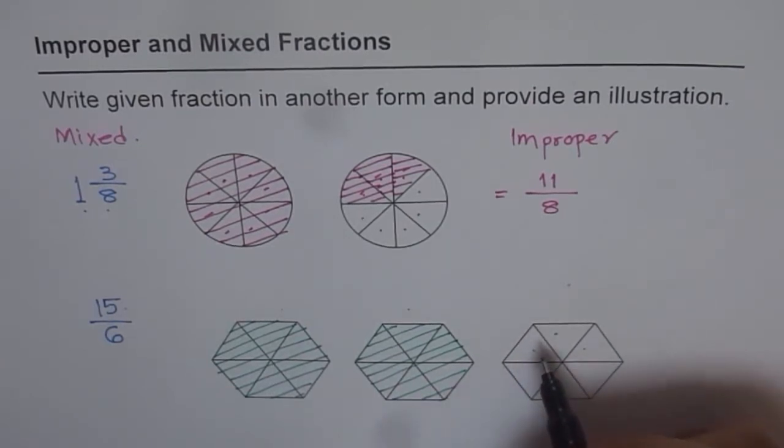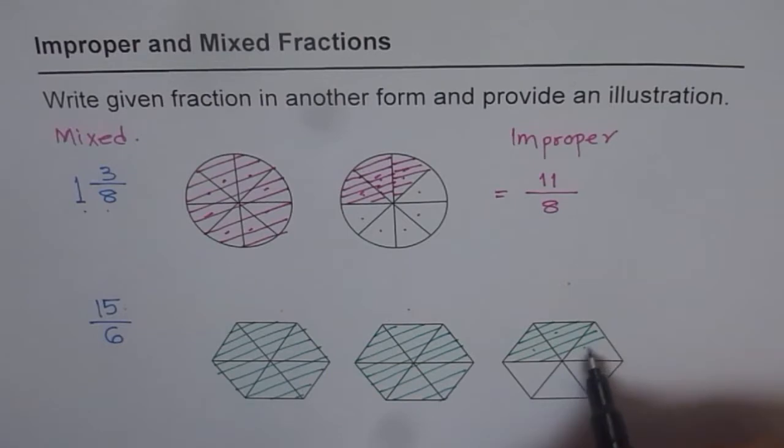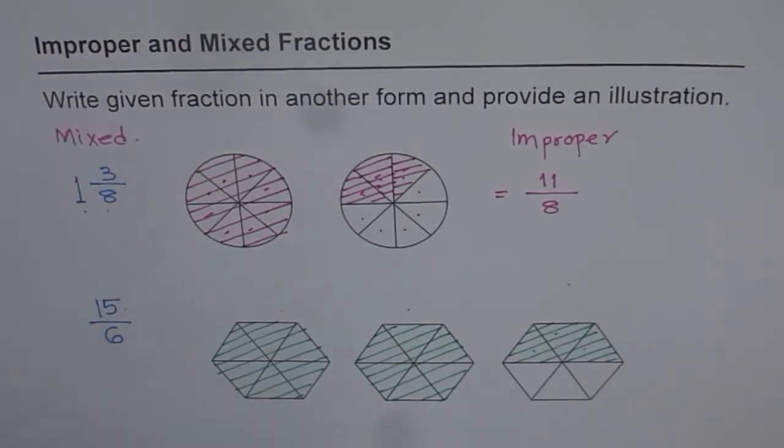So that is 12 sixths. And then you are left with 3 more to go. So you get 3 more to go. So that is half of this. 3 more to go. And that's how we can complete this. So that becomes 15 over 6.